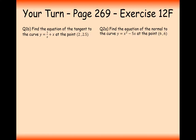Let's have a go at this question. The first thing I would do is rewrite the function as an indice. So dy/dx is going to equal minus x to the minus 2 plus 1, since the differential of x is 1. The next thing is to work out the gradient at this point by plugging in the value 2: minus 1 times 2 to the power of minus 2 plus 1. Minus 1 times 2 to the minus 2 is minus 1 quarter, add 1, so the gradient is 3 quarters.